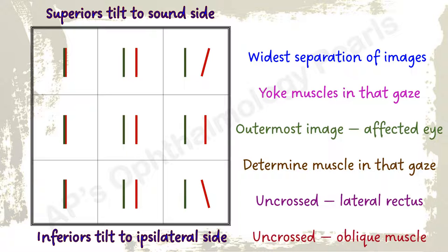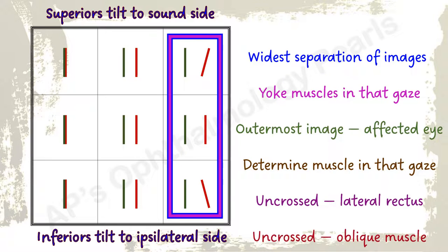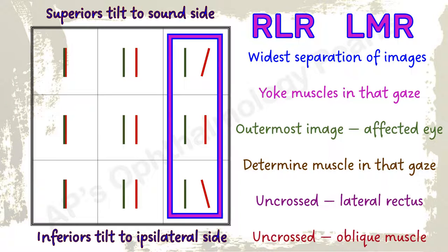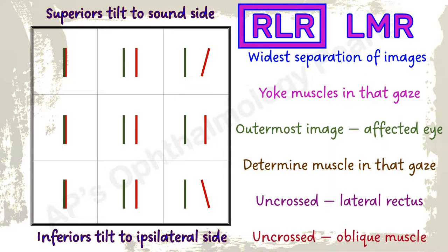Here there is no diplopia in the left fields of gaze. Maximal separation of images is in all the right fields of gaze with no single field having the maximum. There is no vertical separation, so a horizontal muscle is involved. The yoke muscles acting in the right fields of gaze are the right lateral rectus and the left medial rectus. Red is the outermost image, so the involved muscle belongs to the right eye — this is a right lateral rectus palsy. This is an uncrossed diplopia, so the lateral rectus checks out. We needn't worry about tilt in a horizontal muscle palsy.